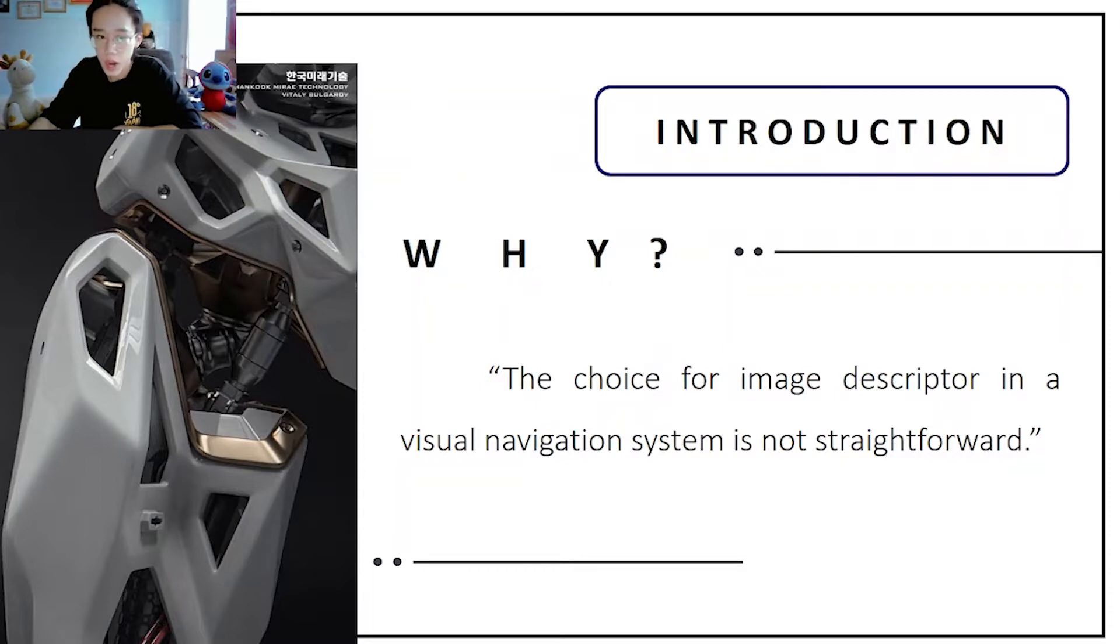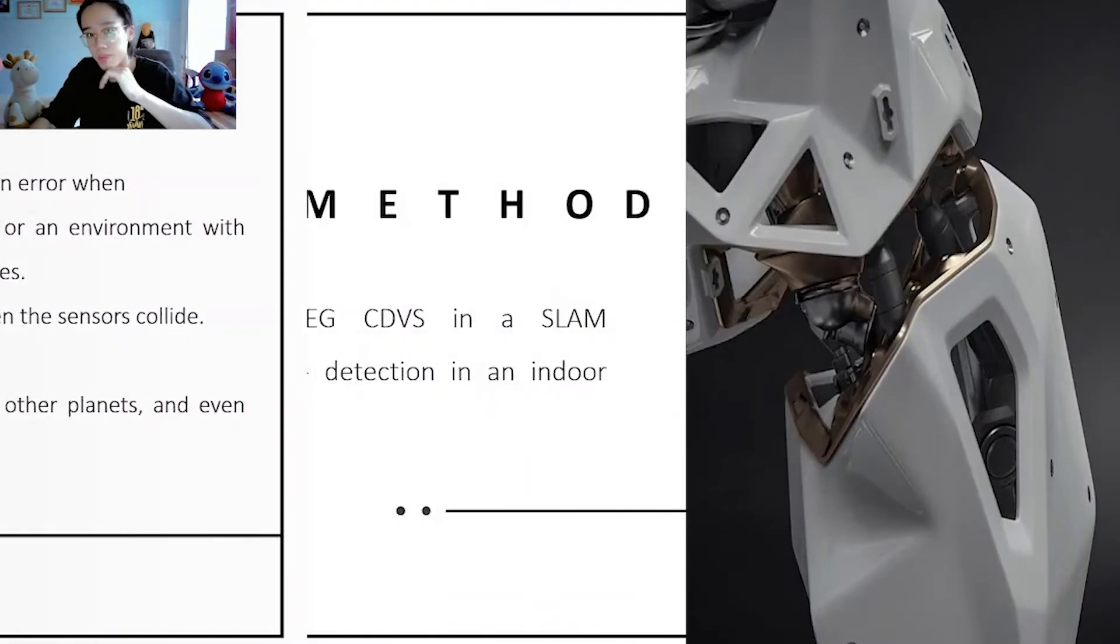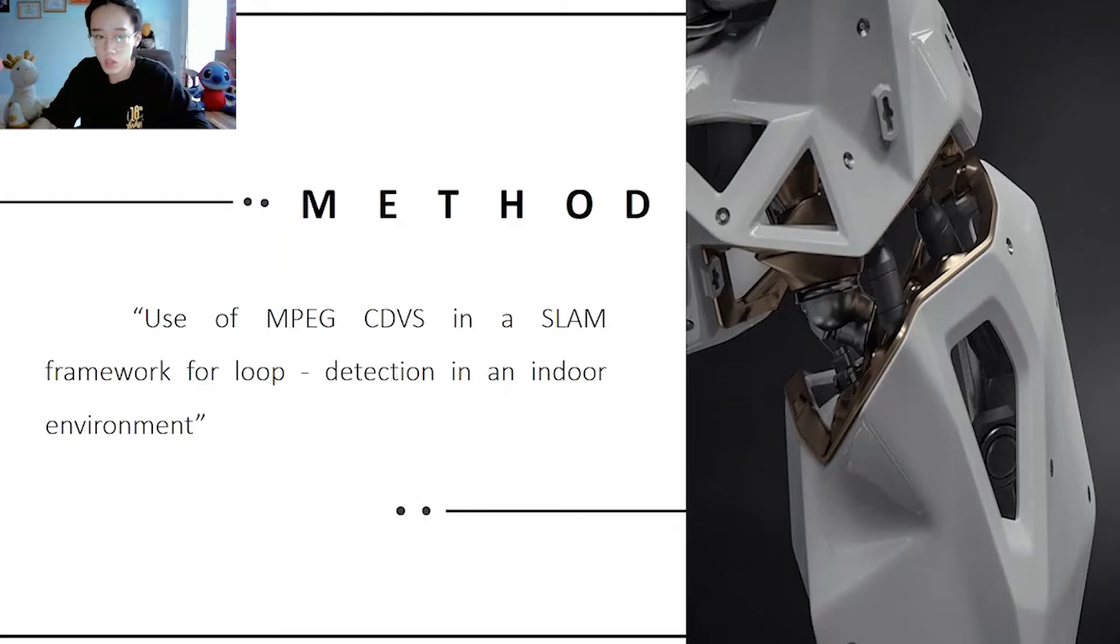The gaps can be understood as limitations of regular products. We have three reasons: Reason one is the SLAM or the tip system will encounter an error when operating in a dynamic environment or an environment with too large an area and too many obstacles. The camera moves unsteadily and when the sensors collide. Reason two is expensive price. GPS sensors cannot work underwater, on other planets, and even indoors.